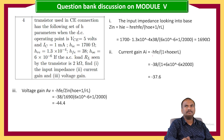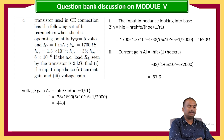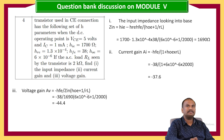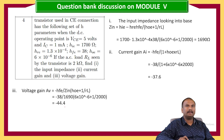Current gain AI equals minus HFE divided by (1 plus HOE times RL), that is minus 38 divided by (1 plus 6×10⁻⁶ times 2000), which equals minus 37.6. Voltage gain AV equals minus HFE divided by ZIN times (HOE plus 1/RL), that is minus 38 divided by (1690 times (6×10⁻⁶ plus 1/2000)), which equals minus 44.4. Both current gain and voltage gain are dimensionless.